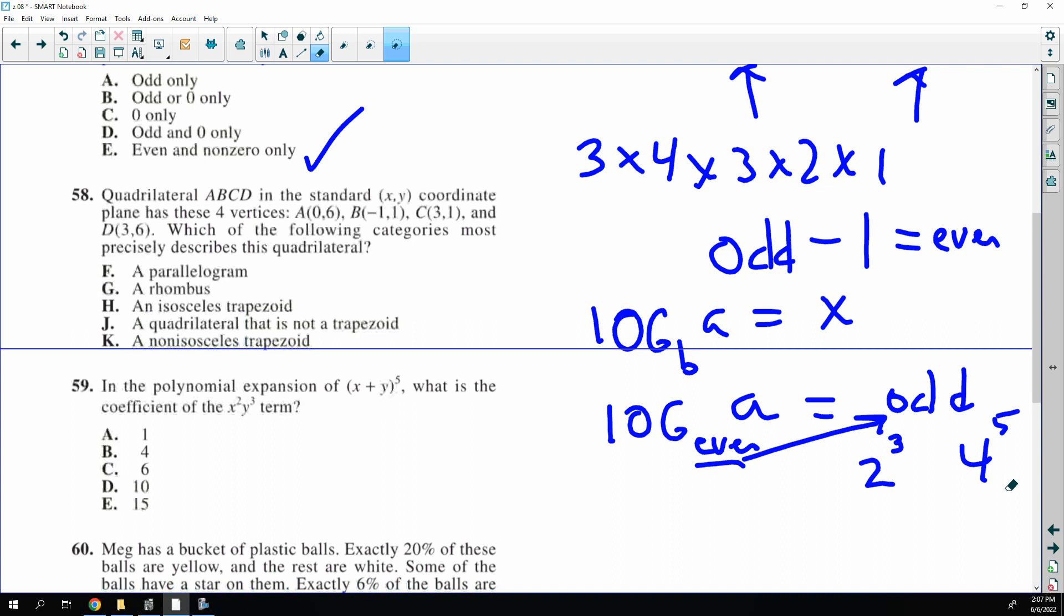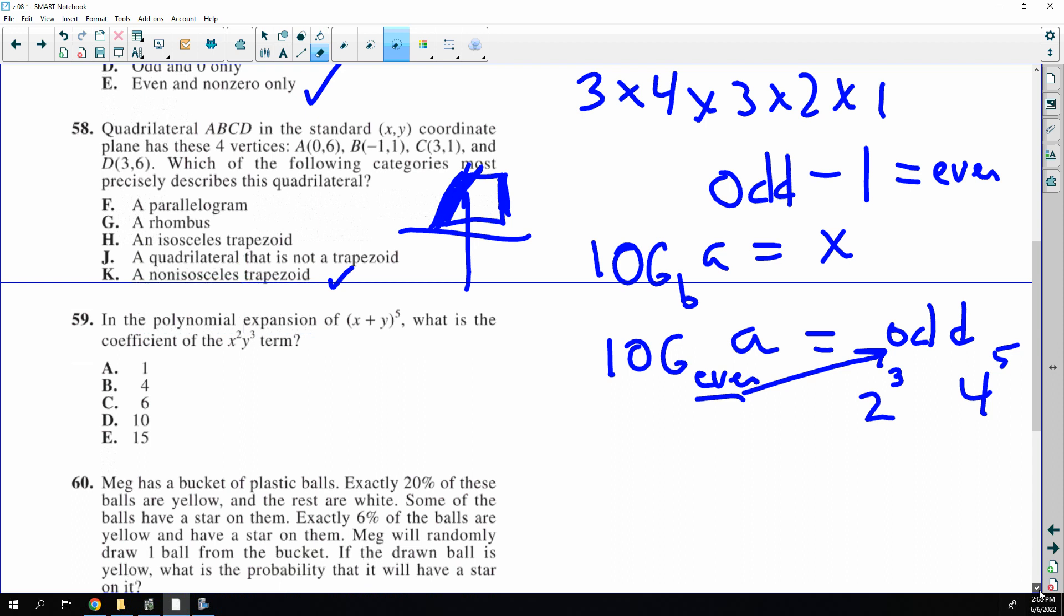Quadrilateral, can we do it on the skinny? Because I used up all the rooms. Zero six, negative one one, three one is going to be right beside it and three six is going to be right above it. So it looks like a trapezoid to me and it's not isosceles. It's definitely not a rhombus or a parallelogram because this one goes straight up and this one would be tilted. So it can't be parallelogram, it's got to be a trapezoid and it's not going to be isosceles because this distance is not going to be that distance. So there it is.